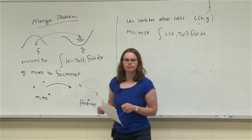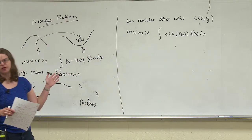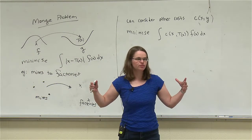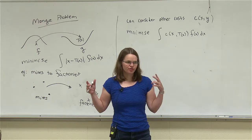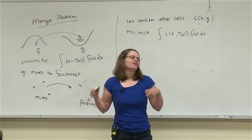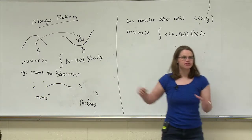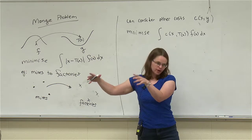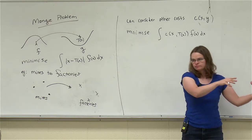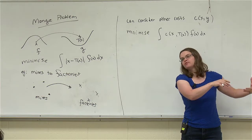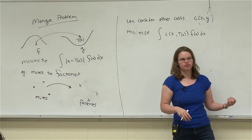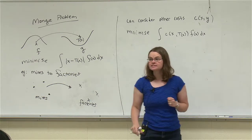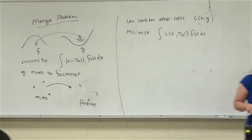Mesh generation is another application. The Met Office in the UK is interested in optimal transport techniques for generating meshes on a sphere, because they use code that assumes a nice structured mesh and don't want to rewrite everything from scratch. They need a map from a very uniform mesh to something that concentrates mesh points in regions where things are happening — following hills and valleys. These are modeled using optimal transportation.